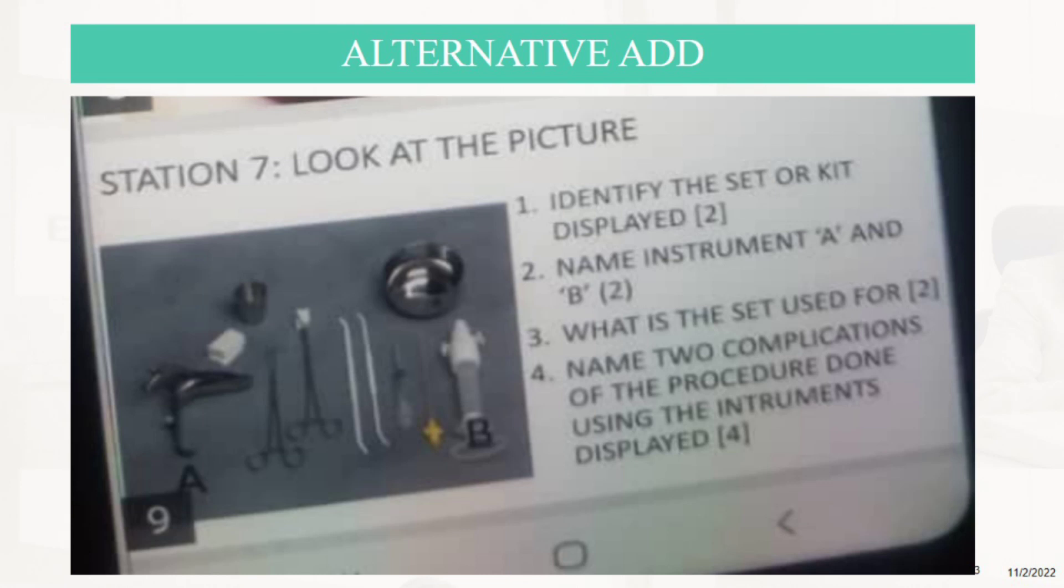This alternative question was asking to identify the set or kit displayed. A is the Cusco speculum arm, these are Garry pots, and these are sponge holding forceps. B is the MVA kit.